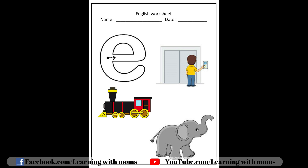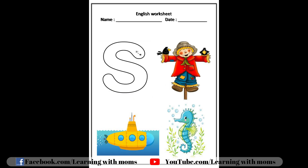A is drawn like an eye and then turn a little. S is sitting like a snake.